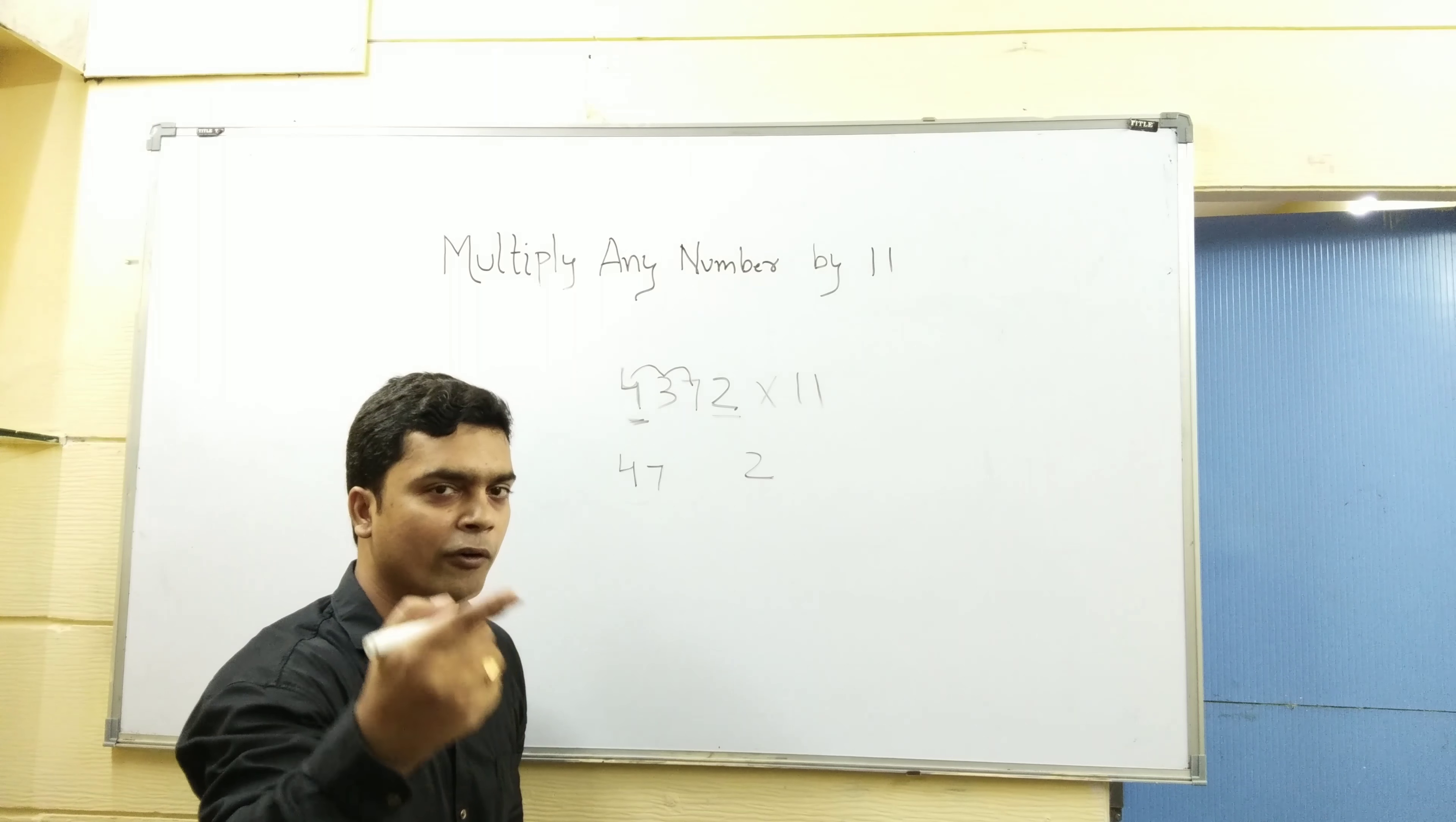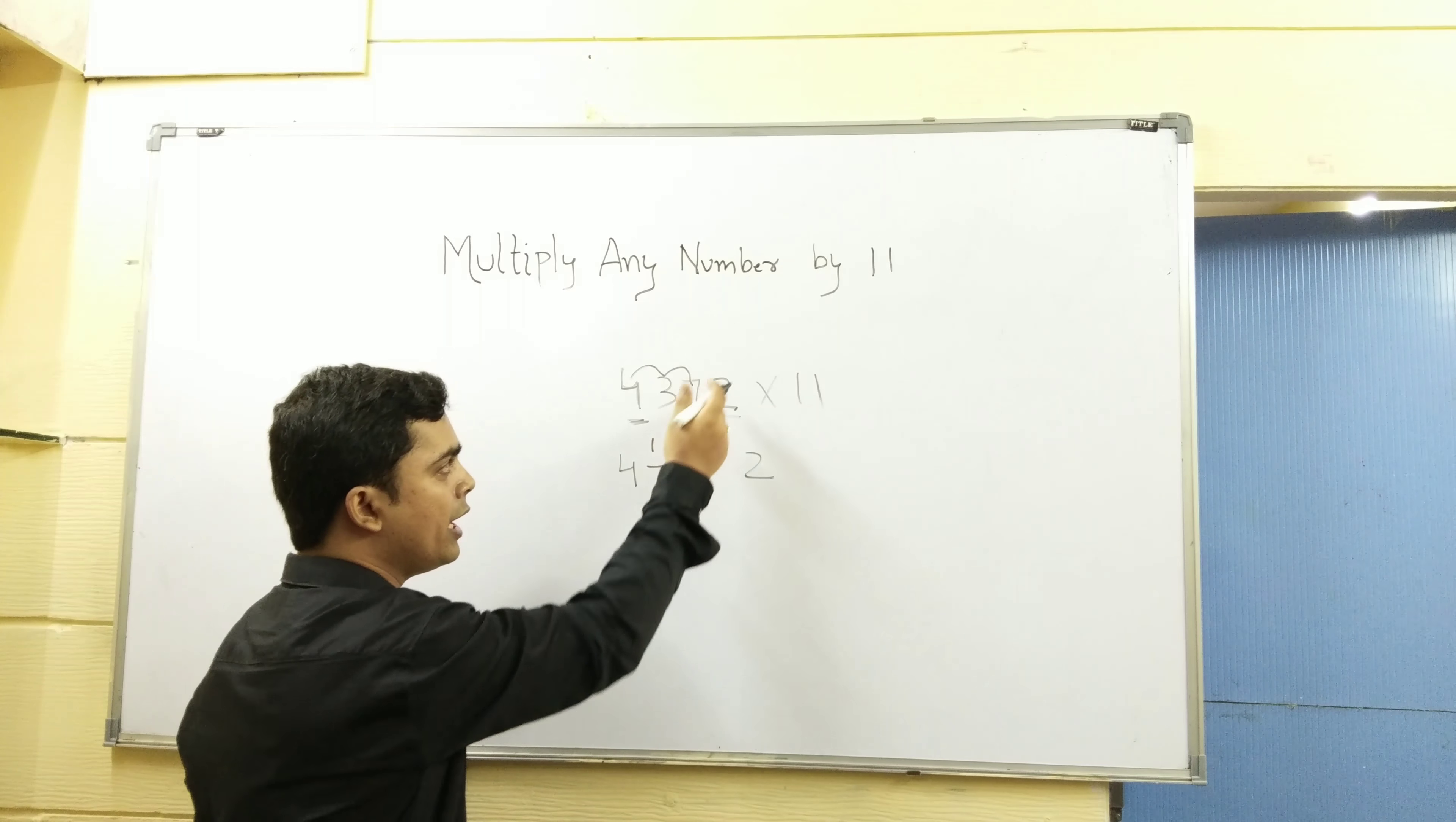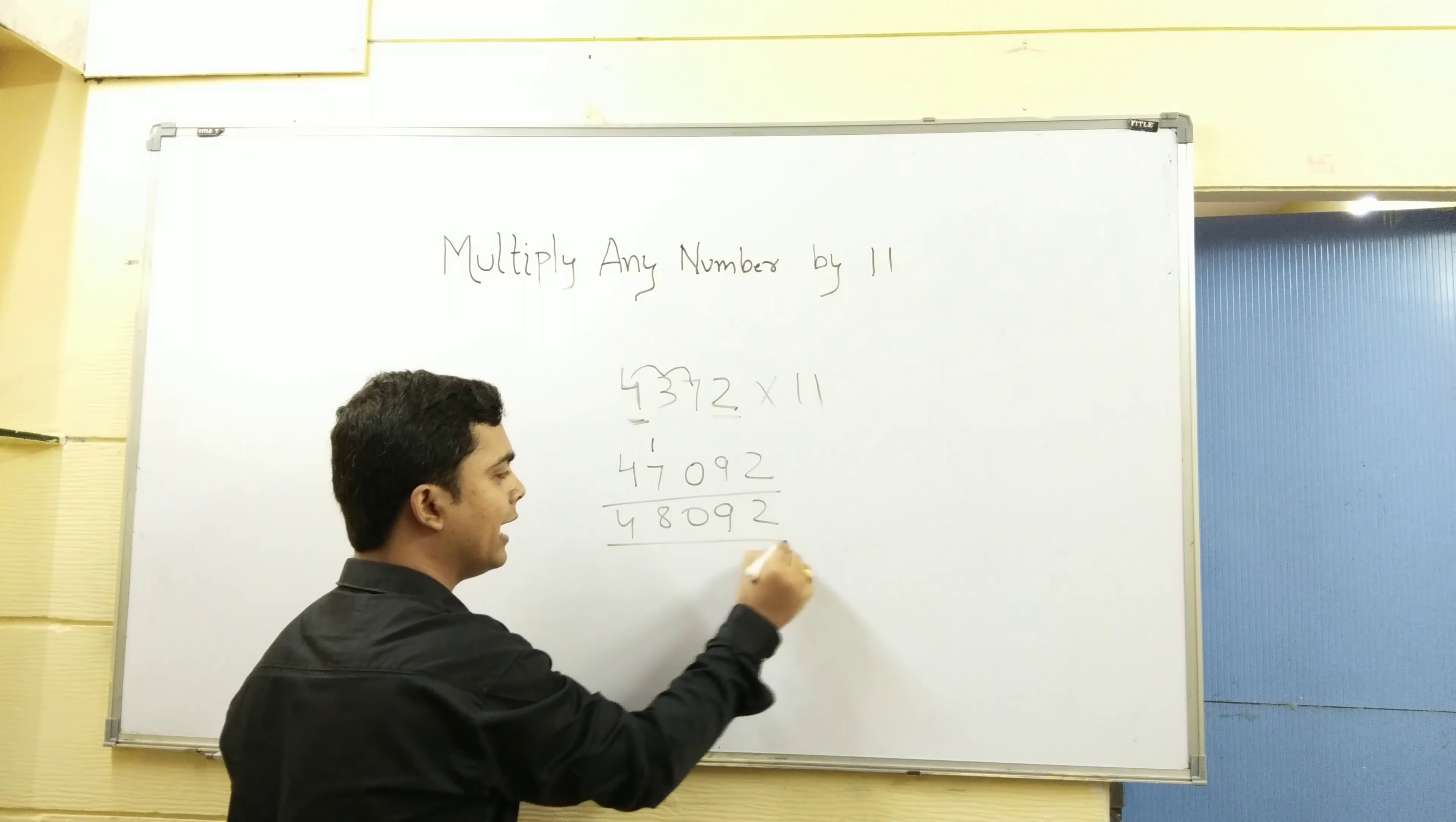Now carry forward. What do you do? In 10, you will be 0. Carry forward 1 number. 2 plus 7, 9. 2, 9, 0. 7 plus 1, 8, 4. This is your answer.